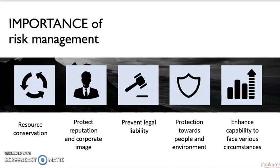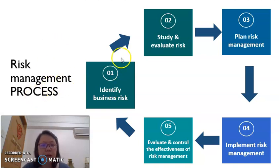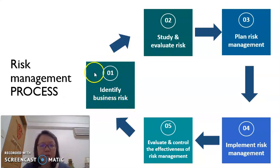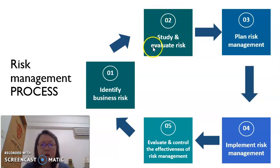When we do risk management, there are five steps. You can refer to the slide here. The risk management process starts by identifying what the possible risks are, and then we study and evaluate those risks. For example, we are currently facing a pandemic. We need to know the possible risks — one of which is employees being affected by the virus. We then assess what possible costs or problems the company might face.